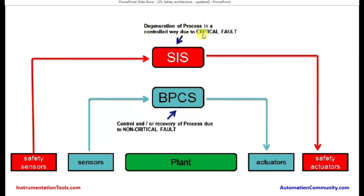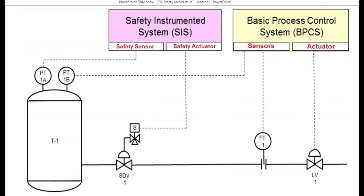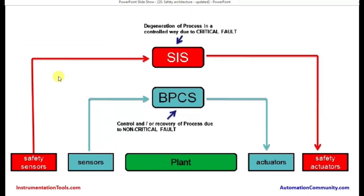A critical fault means the level has already reached a very high level in the process. In order to prevent the equipment — here it is pressure, but it can be level also — from any further hazard and to bring the process to a safe state, the safety instrumented system will act and close the valve.